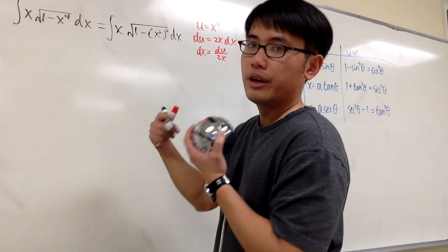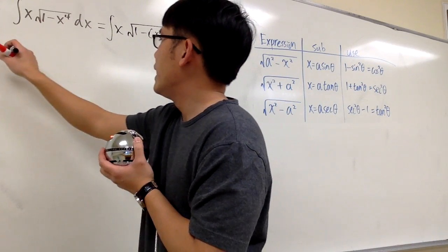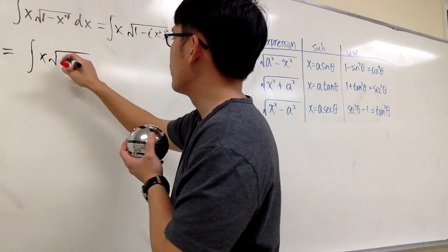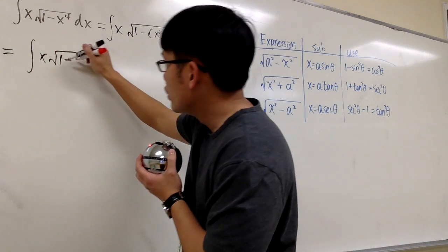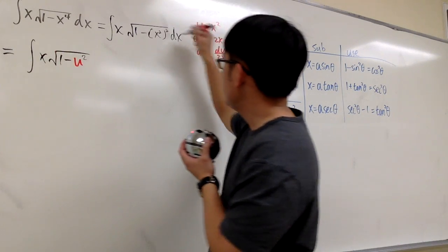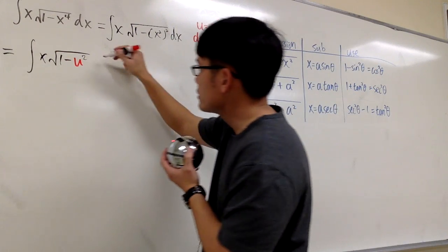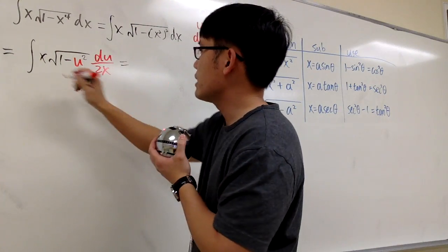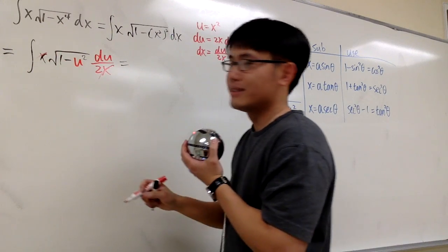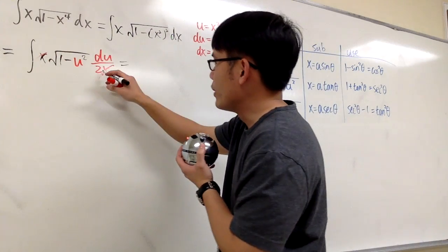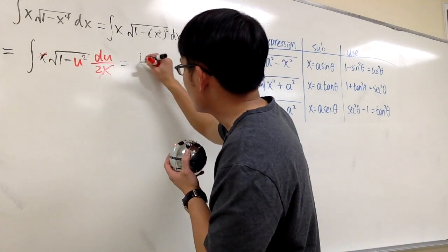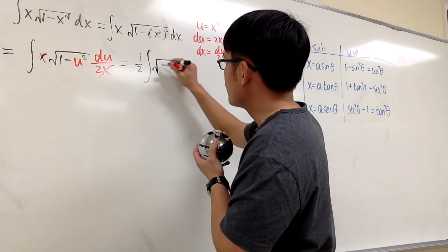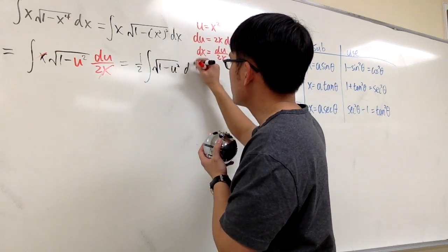Now we're going to take this integral into the u-world. We have the integral of x times square root of 1 minus u squared, and dx is du over 2x. We're lucky to cancel the x's, leaving 1 over 2 times the integral of square root of 1 minus u squared du.